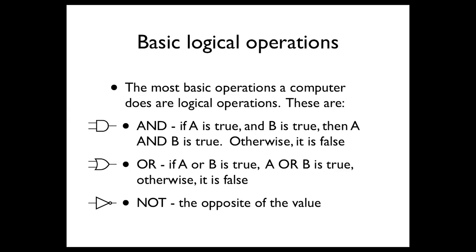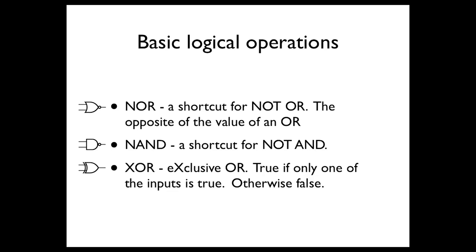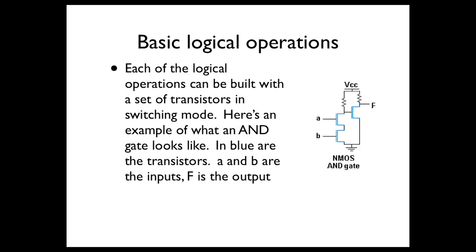Let's start with logical operations because they're the simplest. Logical operations take an input that is either true or false and produce an output that is also true or false. Three basic gates are AND, OR, and NOT. AND: if A and B are true, the output is true, otherwise false. OR: if A or B is true, the output is true. NOT simply inverts: if true, output is false. There are also more complicated gates: NOR (not OR), NAND (not AND), and XOR. Each logic gate can be built using transistors switching on and off depending on the inputs. On the right you can see a circuit schematic for an AND gate.